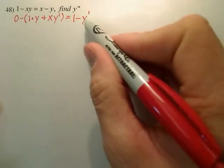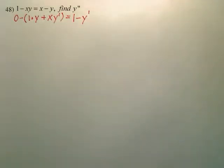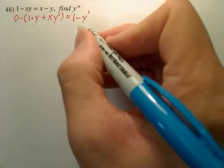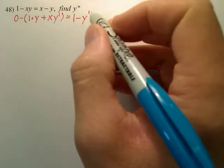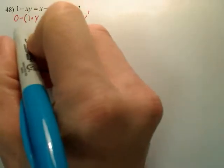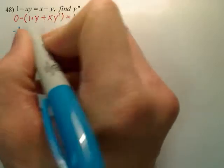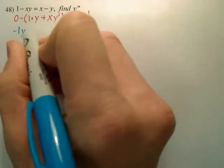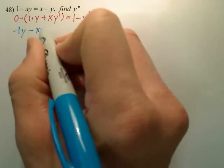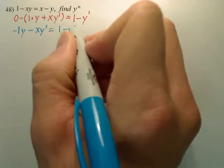Now you could also put instead of y prime, dy/dx for both of these. So that is the first piece. Now the goal is to get y prime by itself, so there's different ways of doing that. Let's first clean this up. So it looks like I have negative, sorry, what is that, negative 1y or negative y, minus xy prime equals 1 minus y prime.